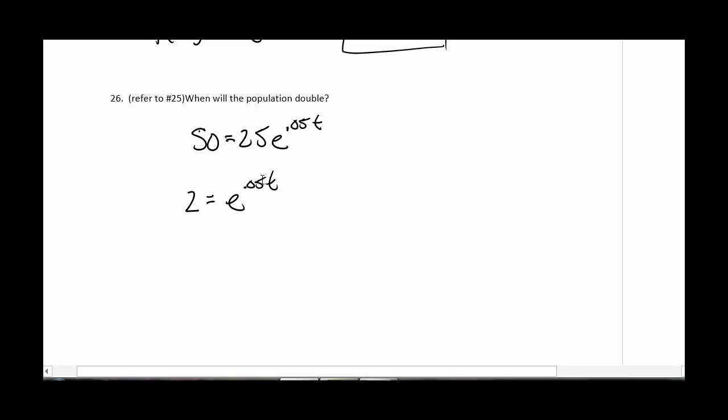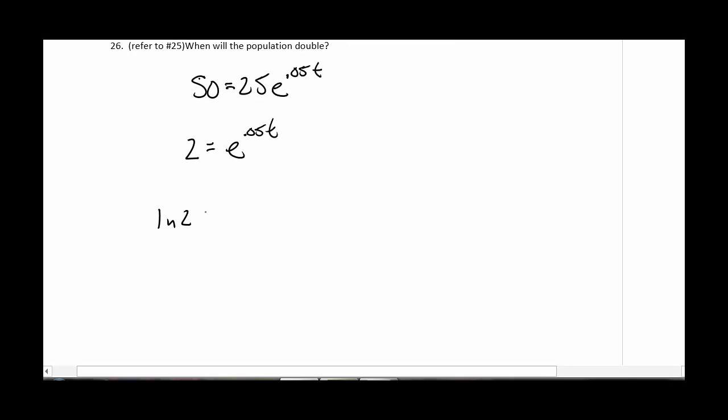And then I want to take the ln of both sides. So ln of 2 equals ln of E to the 0.05T. Now on the right side, that's actually one of our properties dealing with ln. So that's 0.05T. And so T is going to equal ln of 2 divided by 0.05.